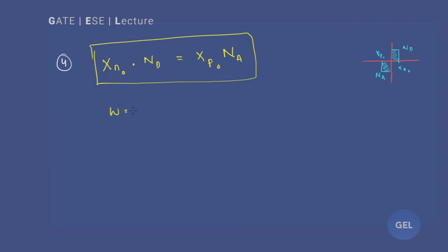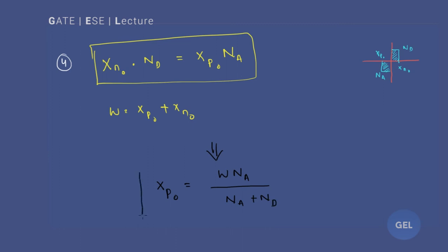Also, W is nothing but xp₀ + xn₀, as we discussed in our previous class. If you substitute this formula, you also get one most important formula: xp₀ = W × Na / (Na + Nd). So this formula is also available to you.